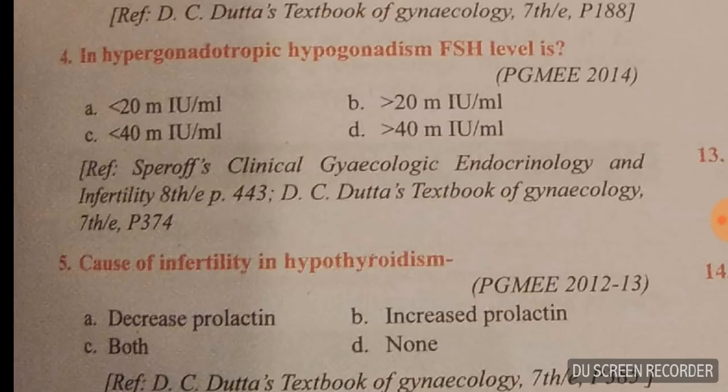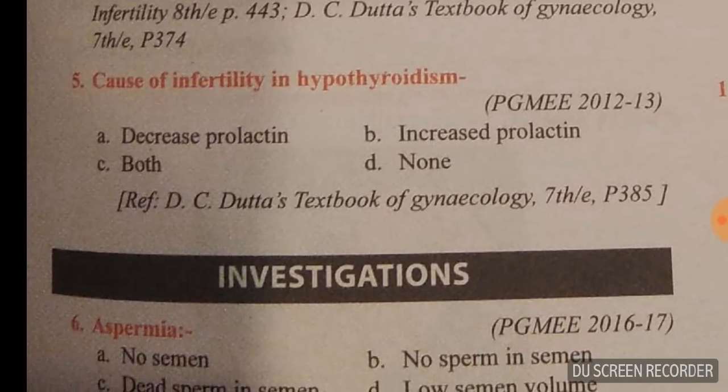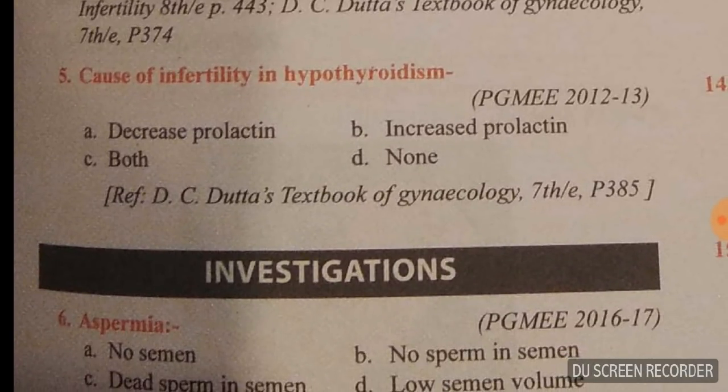Question number four: in hypergonadotropic hypogonadism, the FSH level is more than 20 milli-international units per mL. Question number five: cause of infertility in hypothyroidism — what happens in hypothyroidism is there is an increase in prolactin level.